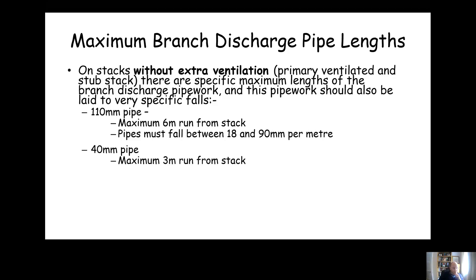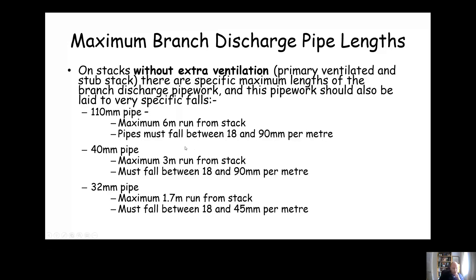For 40 millimeter pipe, the maximum distance that can be run from the stack without extra ventilation is three meters, and again the falls are the same, between 18 and 90 millimeters per meter. For 32 millimeter pipe, the maximum distance it can run from a stack is 1.7 meters, which isn't very far, and again this must fall between 18 and 45 millimeters per meter because it's a smaller bore pipe.